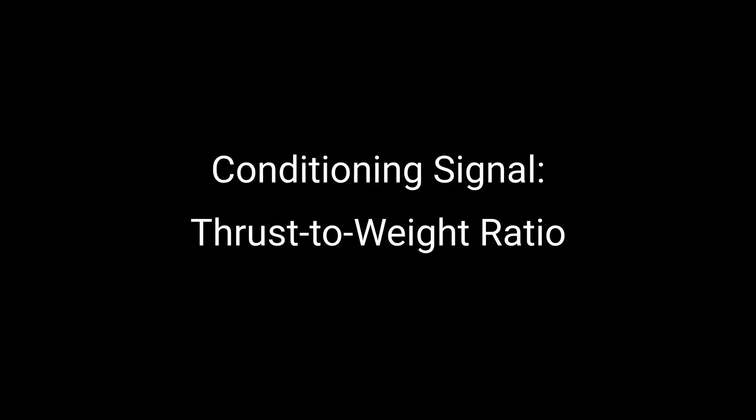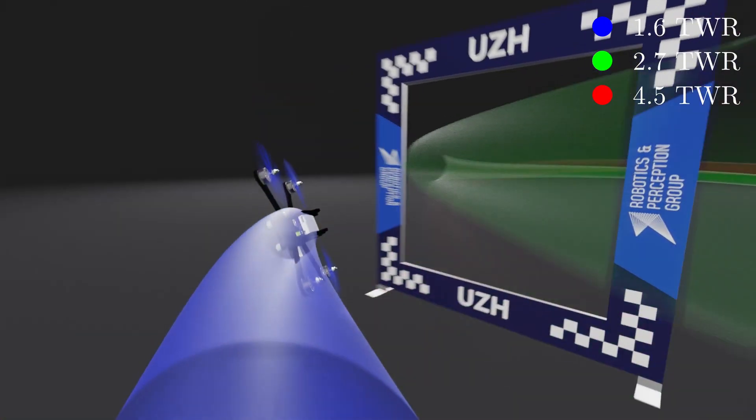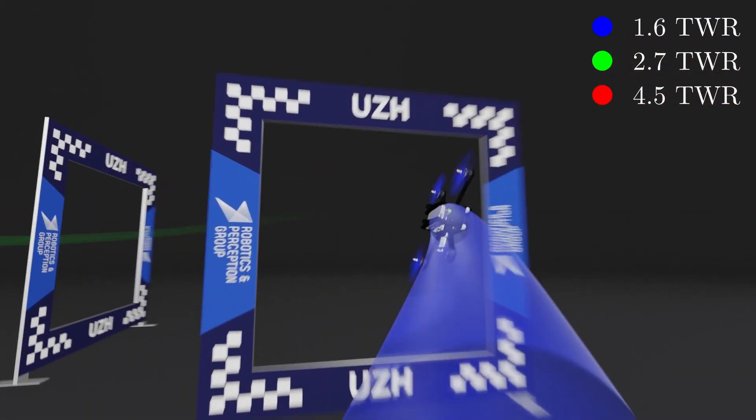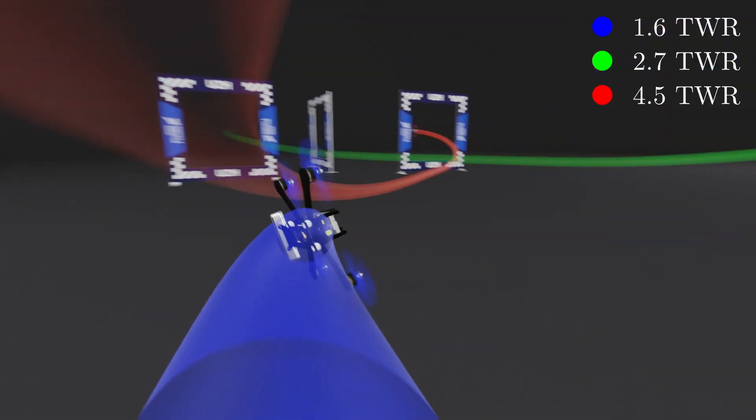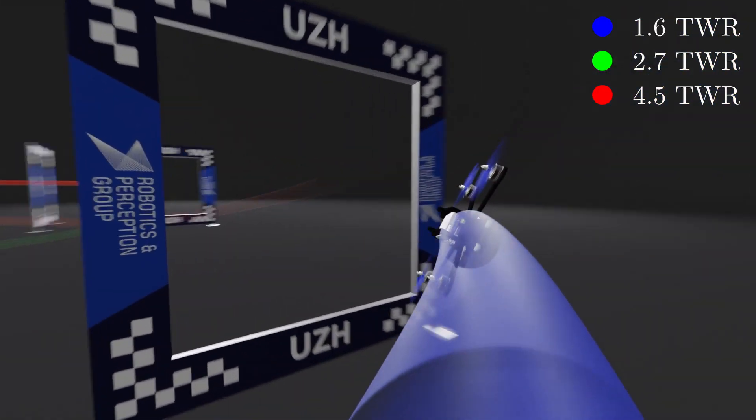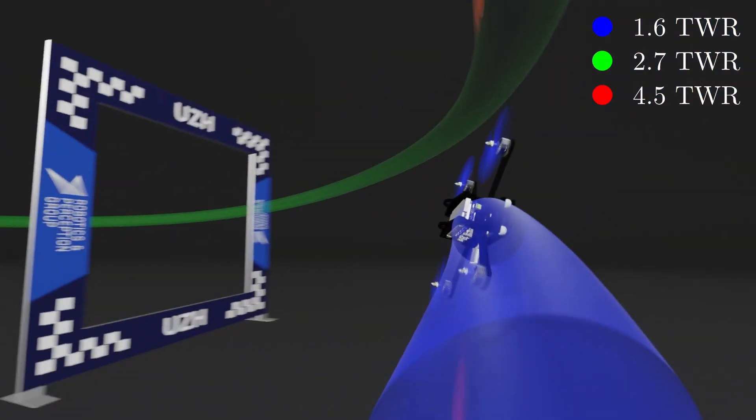In an agile flight setting, a user might want to specify the aggressiveness of the flight by providing a thrust-to-weight ratio limit to the quadrotor. In blue, we have the slowest drone with a thrust-to-weight ratio of only 1.6. Whereas the green and red drone have more thrust available, here we can see the drones racing on a figure-8 track, and they are all controlled by the same policy, just deployed with a different user conditioning signal.